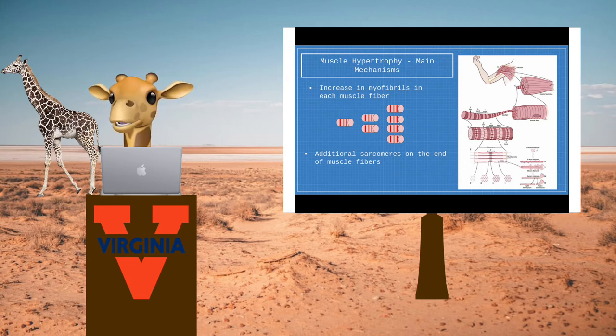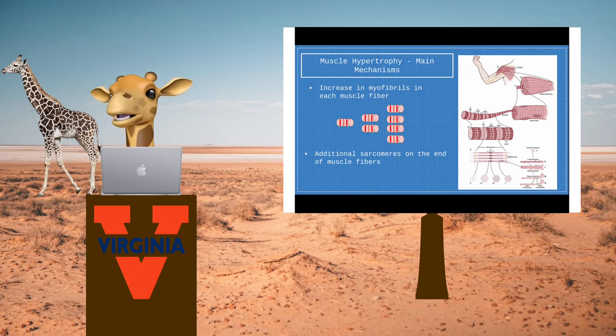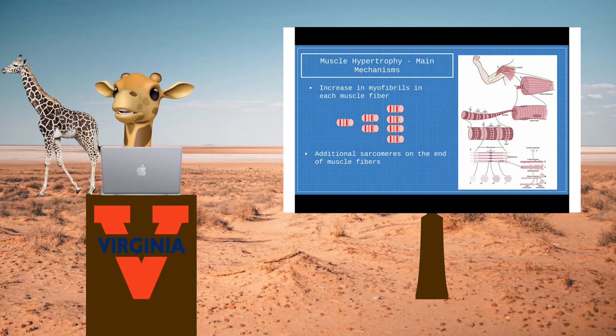Another type of hypertrophy is when additional sarcomeres are added to the end of muscle fibers. This normally happens when the muscle has to adapt to a new functional length. This kind of addition is in series.